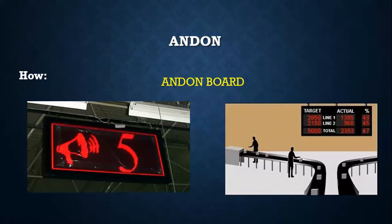Another example is the Andon board, generally LED boards. They are used in large sheds or installed near the roof above equipment or lines. Special symbols, colors, or numbers can be easily adopted with the use of LEDs for effective communication. These are visible even at railway stations or airports if you have noticed.